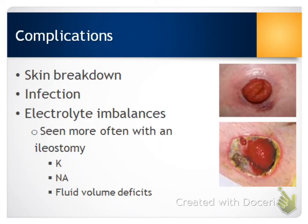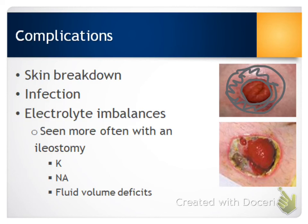Skin breakdown is very important to monitor. If the ostomy appliance is not placed correctly and snugly around the stoma, skin breakdown can occur around it, increasing the risk for infection. Patients should assess their stoma site daily and report any signs of infection to their provider right away. Yellow drainage and buildup around the stoma are signs and symptoms of infection.